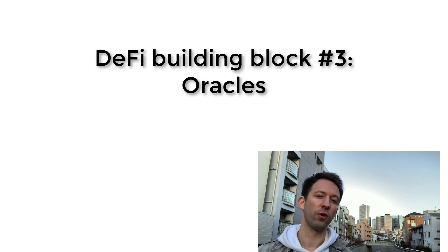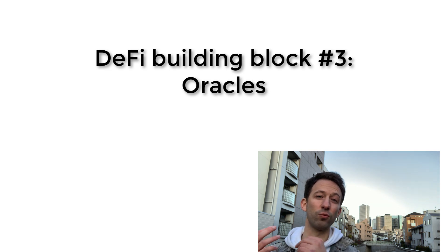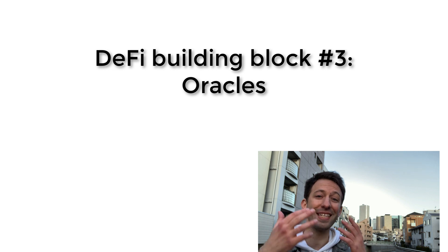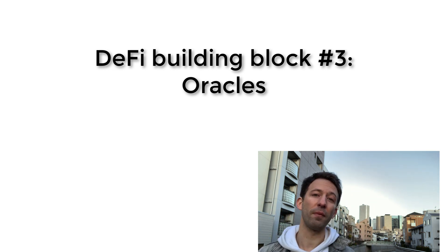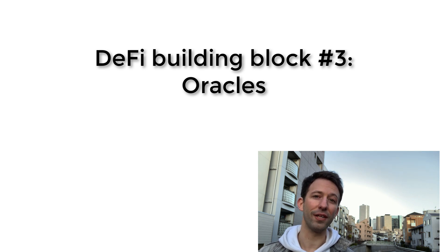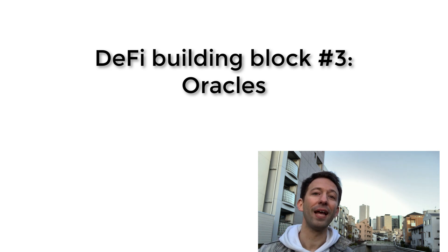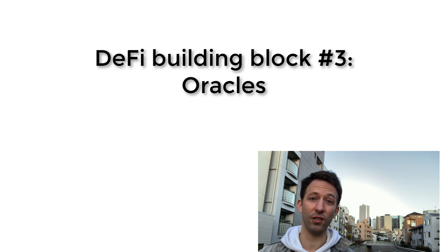Next, let's talk about oracles. A big problem with blockchain systems is that they need to communicate with the outside world, but smart contracts are absolutely unable to call external APIs. We solve this problem by using oracles. The basic idea of an oracle is to inject outside data into the blockchain, and once the data is inside the blockchain, any smart contract can use that data and make decisions based on it.